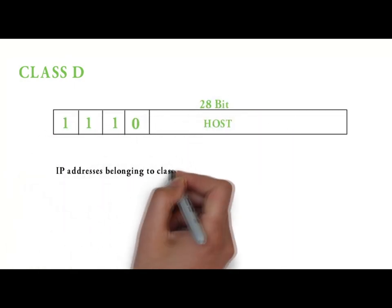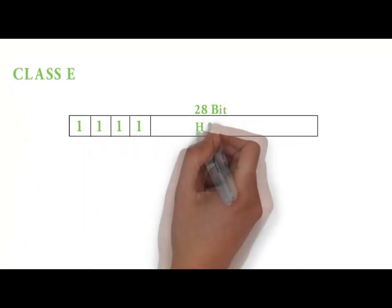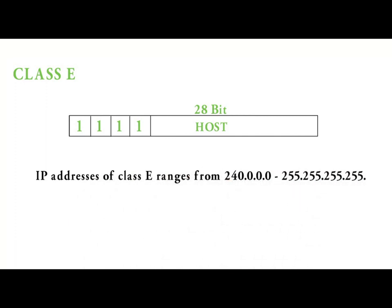IP addresses belonging to class D range from 224.0.0.0 to 239.255.255.255. And IP addresses of class E range from 240.0.0.0 to 255.255.255.255.